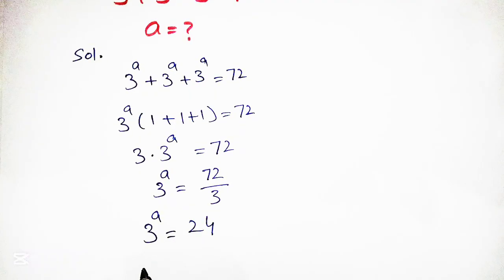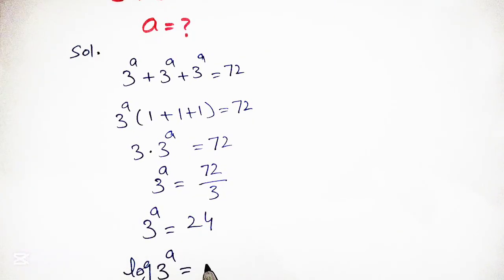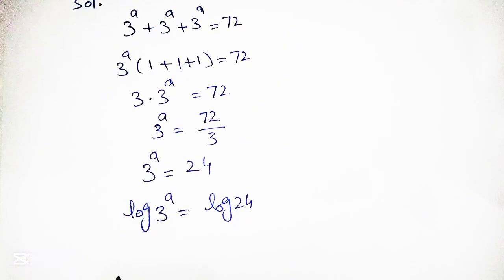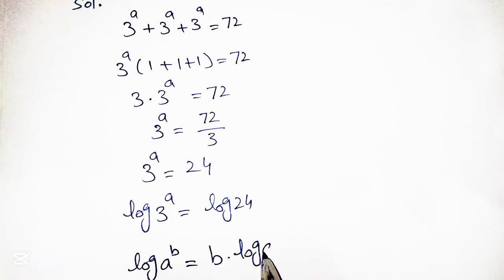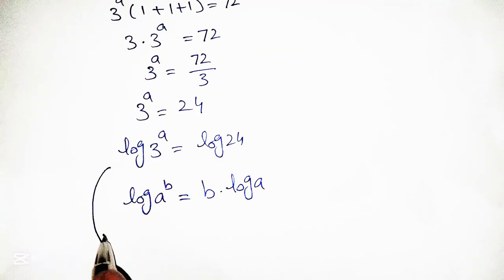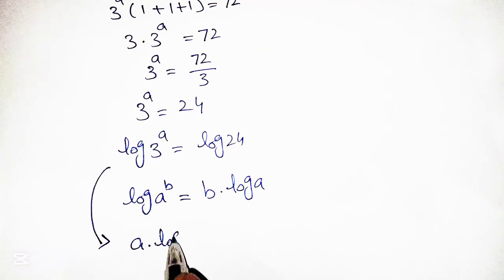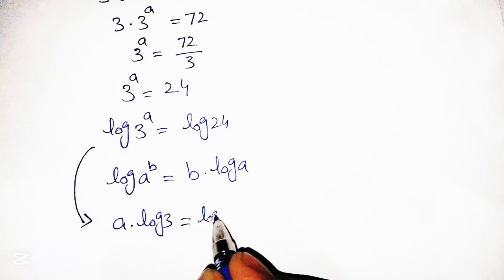Taking log on both sides of this equation, we get log of 3 raised to a is equal to log of 24. We now apply the formula: log of a raised to b is equal to b into log of a. Using this formula, we rewrite the equation as a into log of 3 is equal to log of 24.